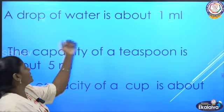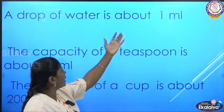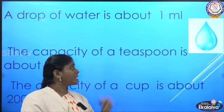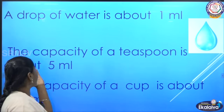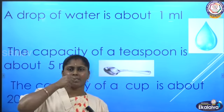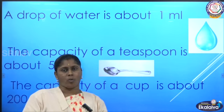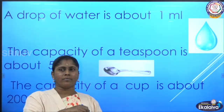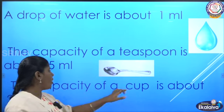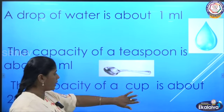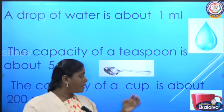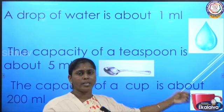Let us see some more examples. A drop of water is about 1 millilitre. The capacity of a teaspoon is about 5 millilitres — the spoon used at home can hold 5 millilitres of liquid. The capacity of a cup is about 200 millilitres. The cups we use to drink coffee and milk have a capacity of 200 millilitres.